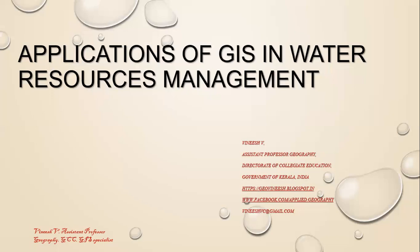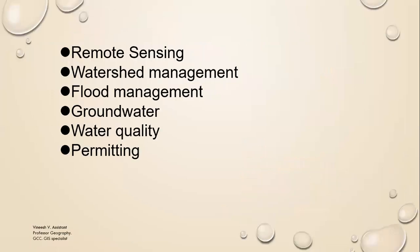Today we will discuss remote sensing as a source of data collection, then watershed management, flood management — how to use GIS for disaster management, landslide and flood management — then groundwater, water quality, and permitting. The three main things are watershed management, flood management, groundwater, and water quality.